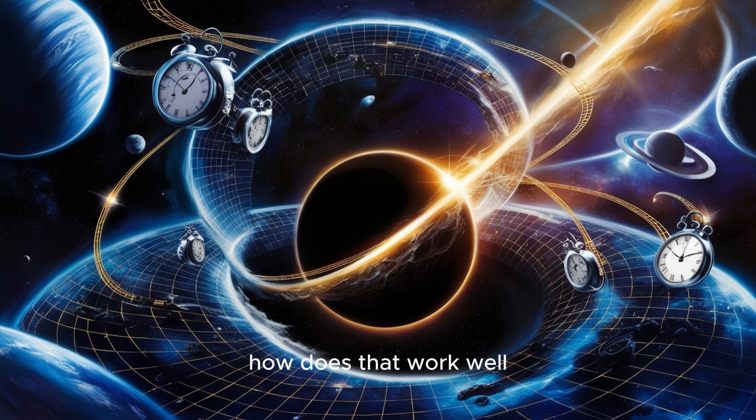What? How does that work? Well, remember, light travels at a finite speed, even though it's really fast. When we look at distant stars and galaxies, that light has been traveling for a long time, sometimes billions of years. So the light from a star a billion light years away is showing us what that star looked like a billion years ago. Exactly. That's amazing. It's like the universe is a giant time capsule.